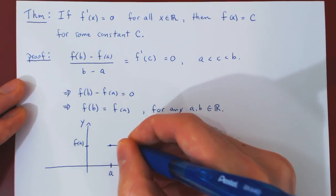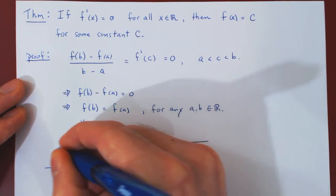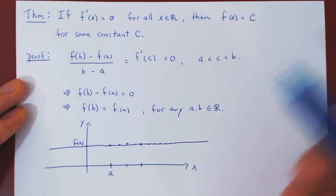And you can see, therefore, that the function is nothing but a constant function, a horizontal line. And this completes the proof.